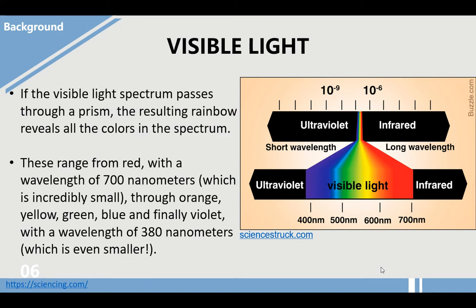If the visible light spectrum passes through a prism, the resulting rainbow reveals all the colors in the spectrum. This ranges from red with a wavelength of 700 nanometers, through orange, yellow, green, blue, and finally violet with a wavelength of 380 nanometers.